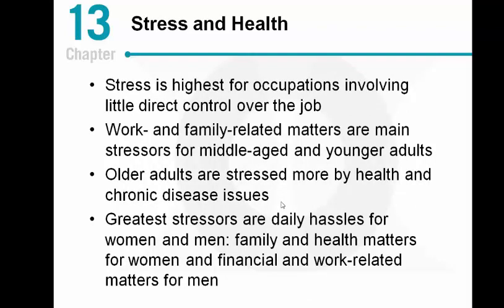Stress is another major issue during middle adulthood. We're usually at the peak of our careers and right in the middle of family life. If people marry in their late 20s and have kids a few years after, then around age 40 they likely have elementary school-aged children and are also at the peak of their careers. Stress is heightened when you feel little control over your job — including control over your schedule, time at work, and input into decisions being made. Work and family-related matters are usually what's on an individual's mind during this time.